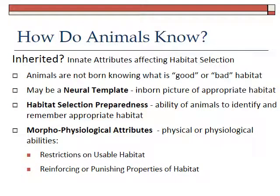The first thing to ask is how do animals know? We know that animals have really well-defined habitat preferences, but how do they know? How do they learn that? Well, the first thought is it may be partly inherited, because it is fairly consistent, and we know that there are some innate attributes that affect habitat selection.